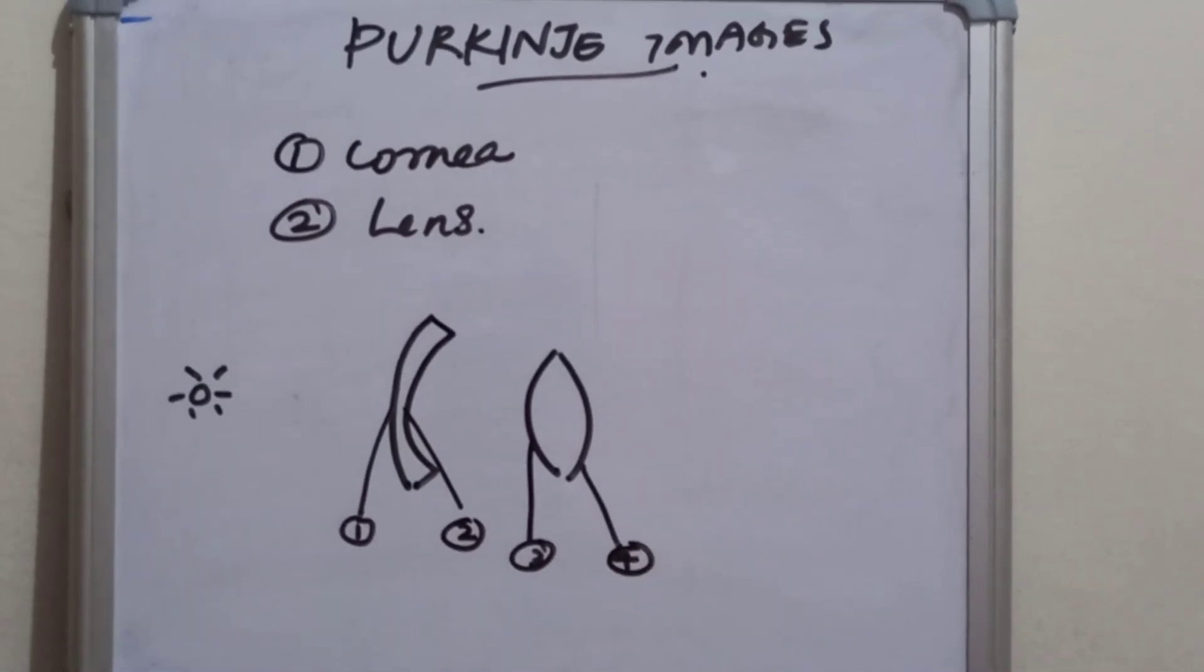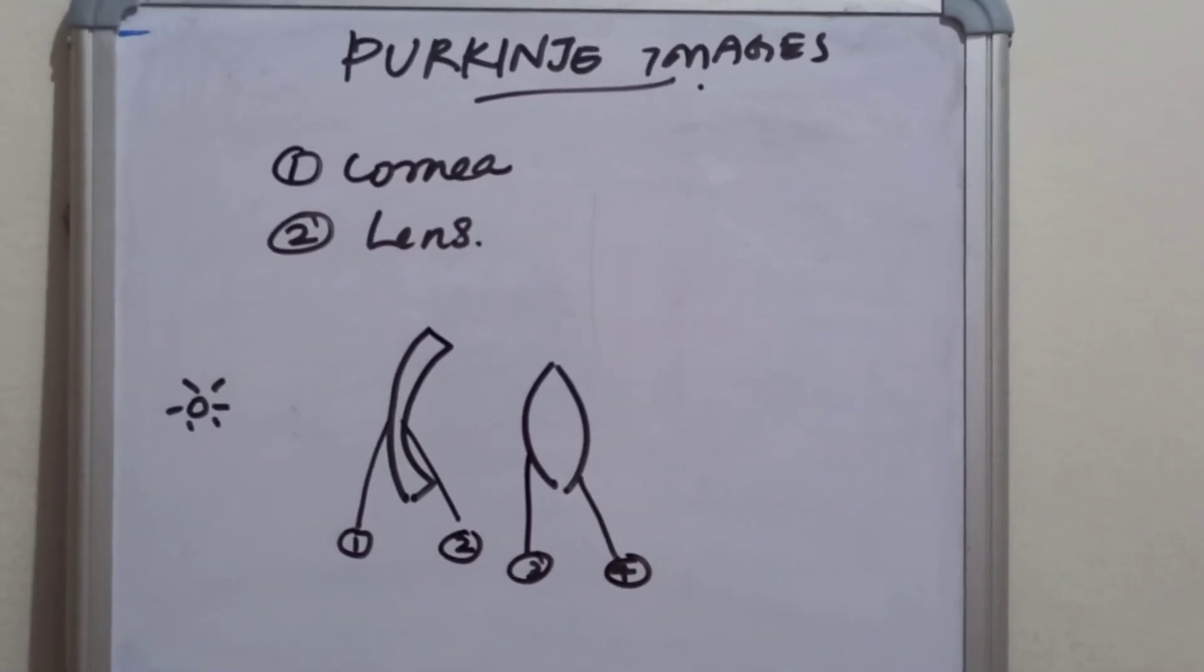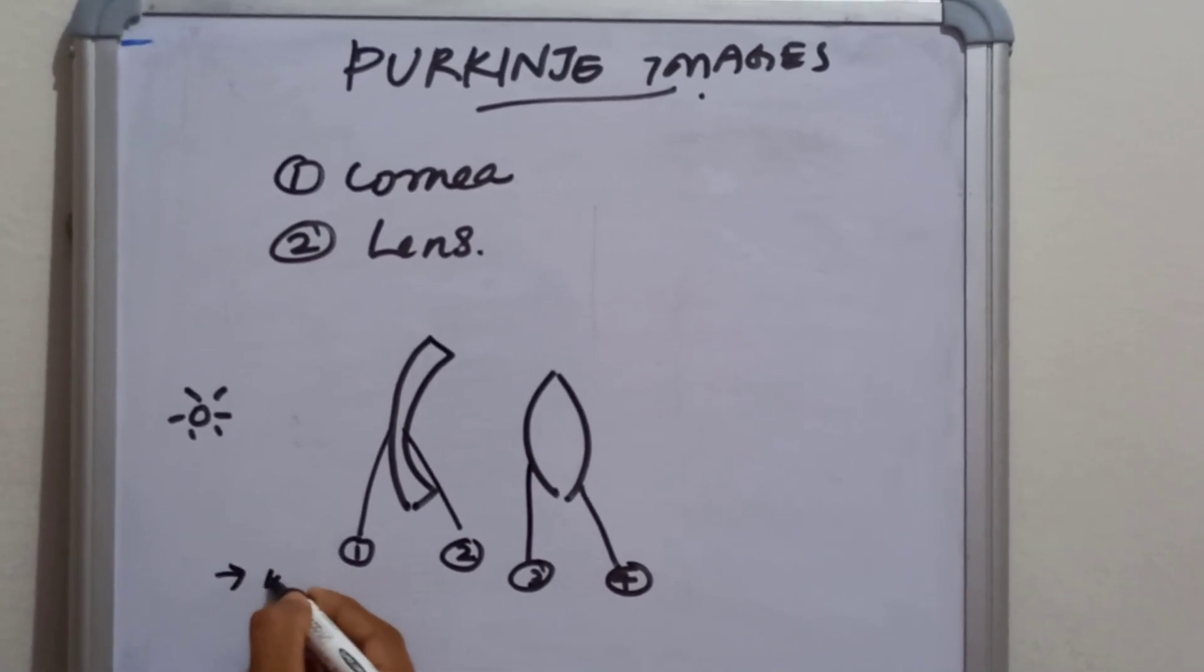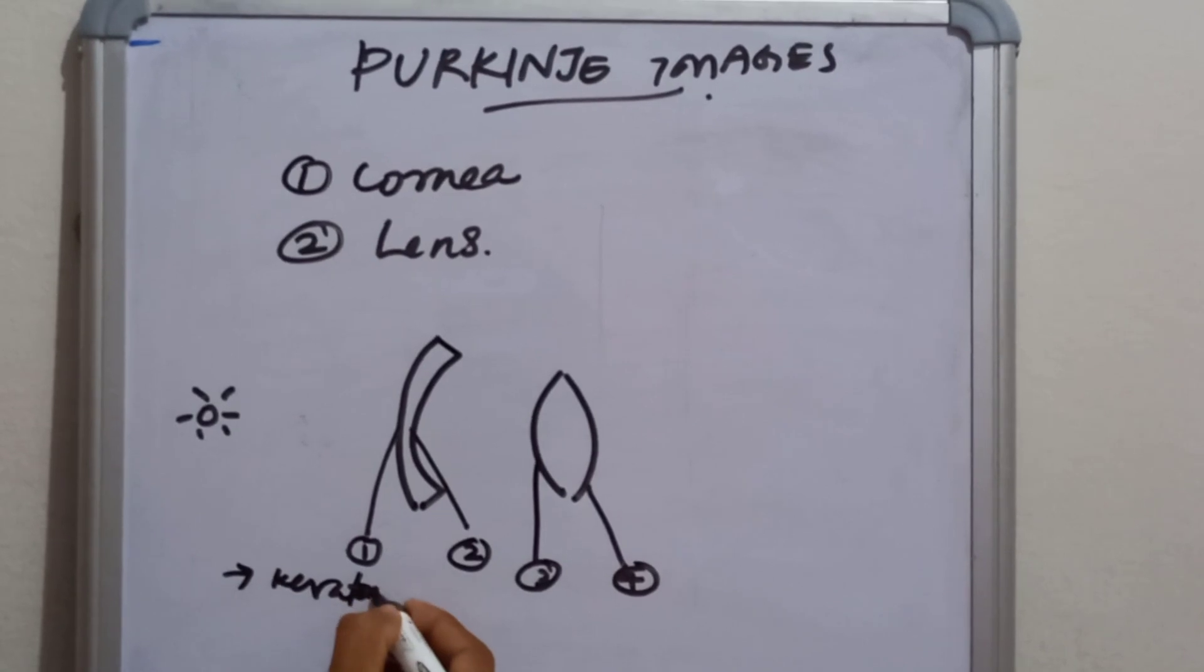These are the four Purkinje images formed in the eye. The first one is used for the keratometry reading or to check the corneal curvature.